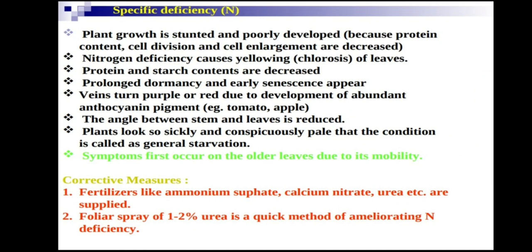The anthocyanin pigment development on leaves commonly occurs in tomato and apple. The angle between the stem and the leaves is reduced, so photosynthesis cannot take place correctly. Plants look sickly and conspicuously pale — a condition called general starvation. There is no growth in the plant under this condition. Symptoms first occur on lower, older leaves due to nitrogen's mobility.